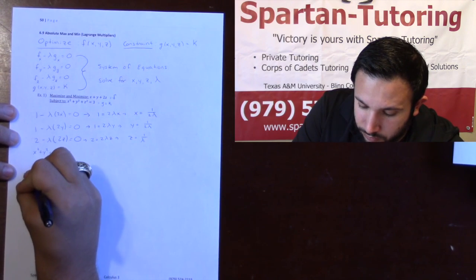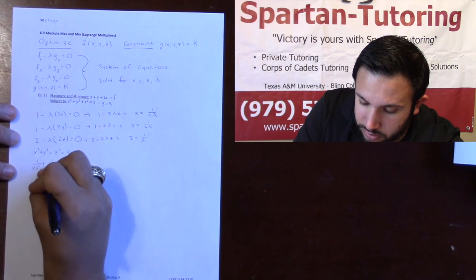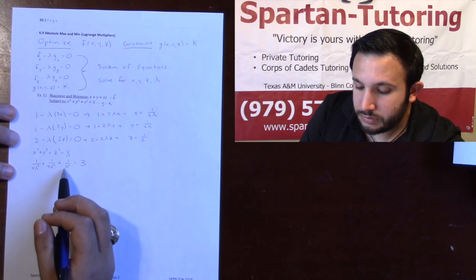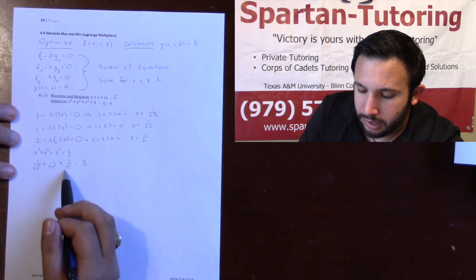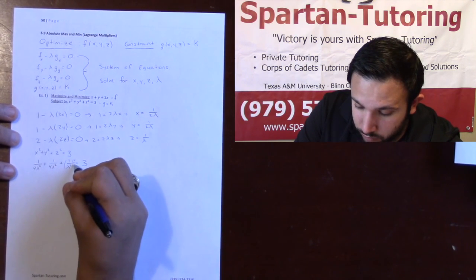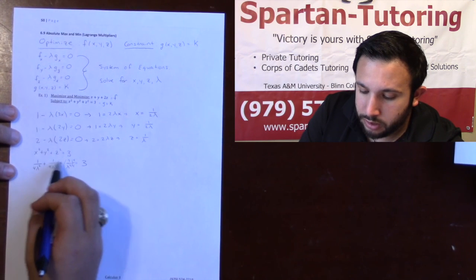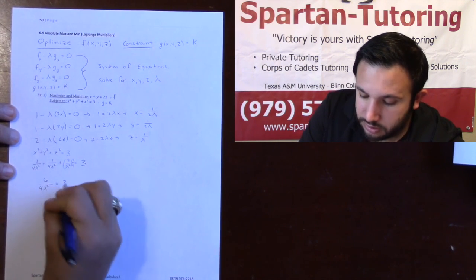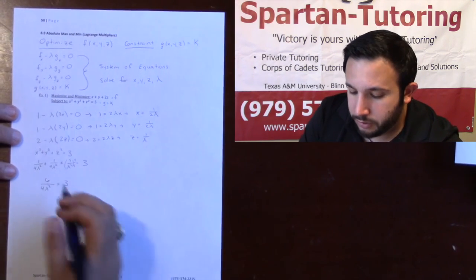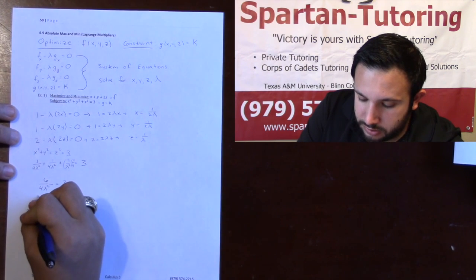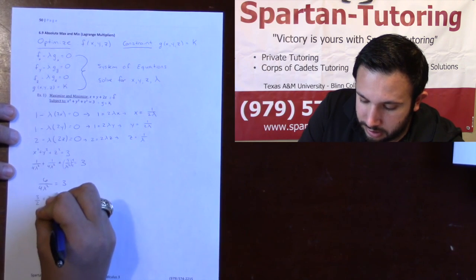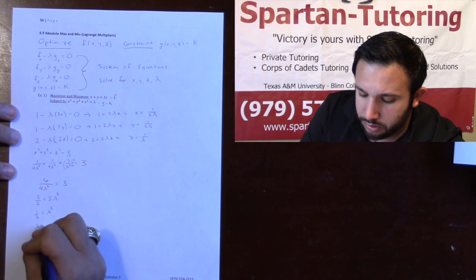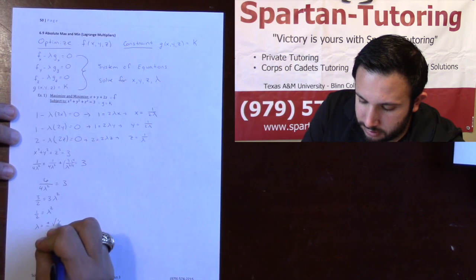Plugging into the constraint: x² = 1/(4λ²), y² = 1/(4λ²), and z² = 1/λ². That equals 3. Getting a common denominator of 4λ², multiply z² by 4/4: (1 + 1 + 4)/(4λ²) = 3, so 6/(4λ²) = 3, which reduces to 3/(2λ²) = 3. Dividing by 3 gives λ² = 1/2, so λ = ±√(1/2).